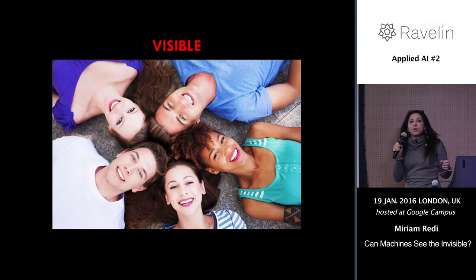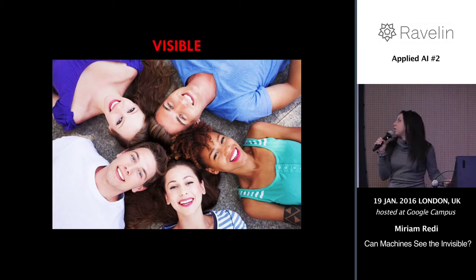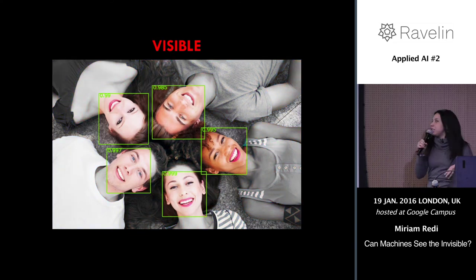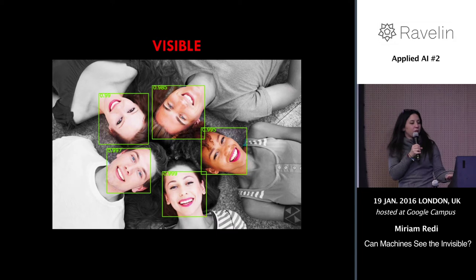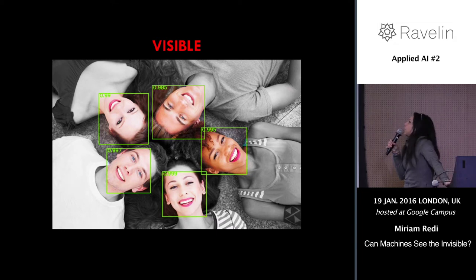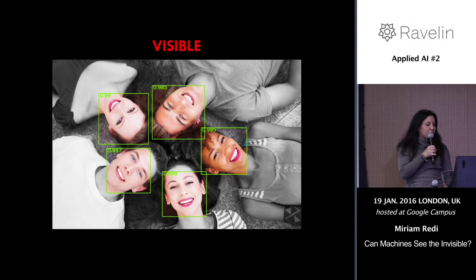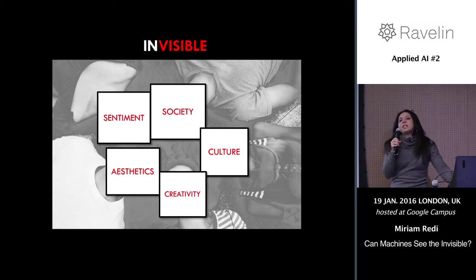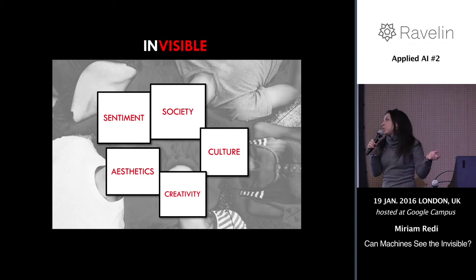Machine vision, as we know it, has reached impressive results in the detection of visible, tangible objects in images and videos, such as faces, cats, dogs, and so on. However, when you look at an image, you don't only see what is visible. You don't only see objects. Because there is a whole world of invisible properties, intangible subjective attributes that we attach to an image when we look at it, but we can't really see them.